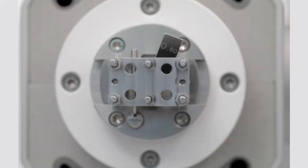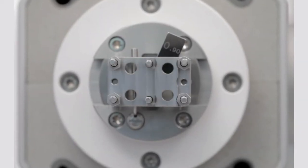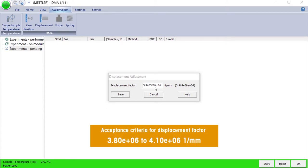Repeat the procedure for the other two gauge blocks as described for the first. After the third adjustment is finished, the dialog box Displacement Adjustment, with the newly calculated displacement factor, pops up in the module control window of STAR-E software. Check that the new displacement is within the limits and press Save.